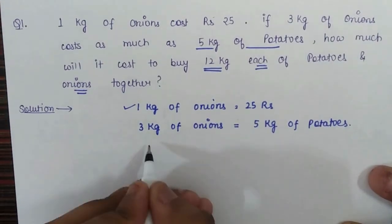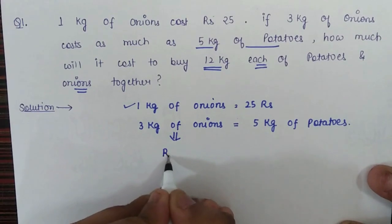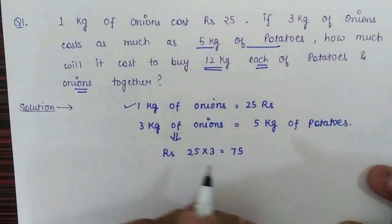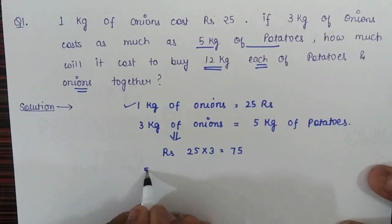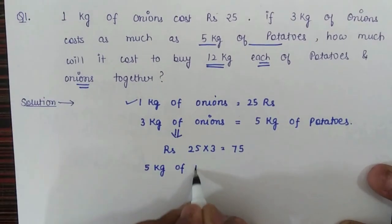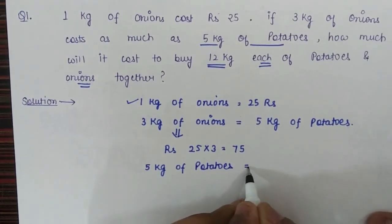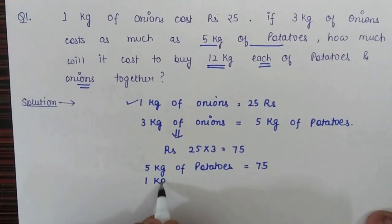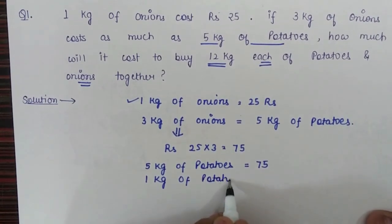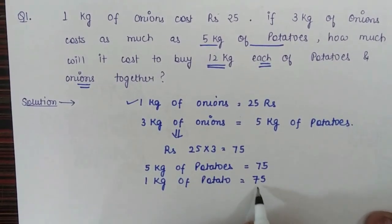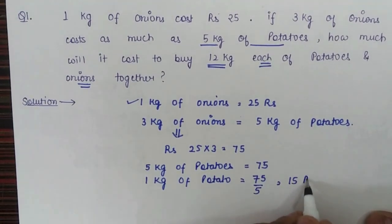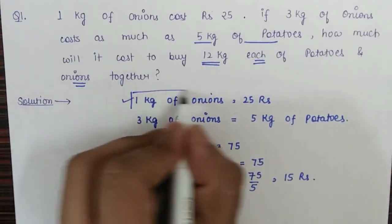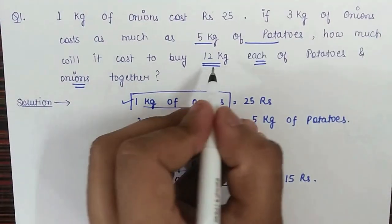Since we know the price for one kilogram of onion, three kilograms of onion will cost 25 into 3, which is 75 rupees. So five kilograms of potatoes will also cost 75 rupees. Therefore, one kilogram of potato will cost 75 divided by 5, which equals 15 rupees. Now we know the price for one kilogram of potato and one kilogram of onion.